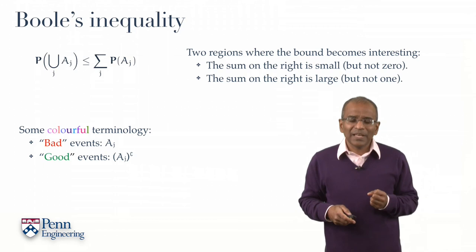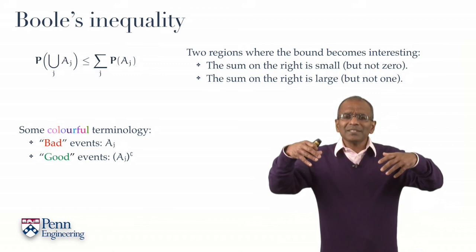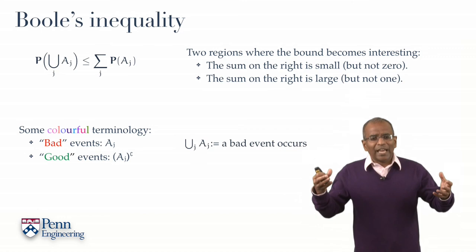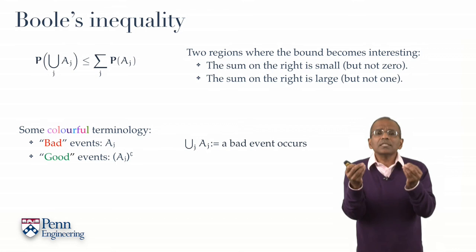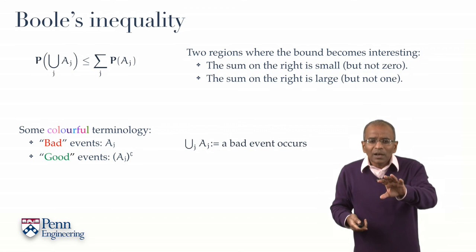And then, of course, naturally, the complements of these events, the Aj complements, are what we call good events. Now, with this kind of idea, to give us a feeling for what we are discussing, then the union of all the Ajs means that if this occurs, then some bad event occurs. One or more bad events occur. Something wicked this way comes.